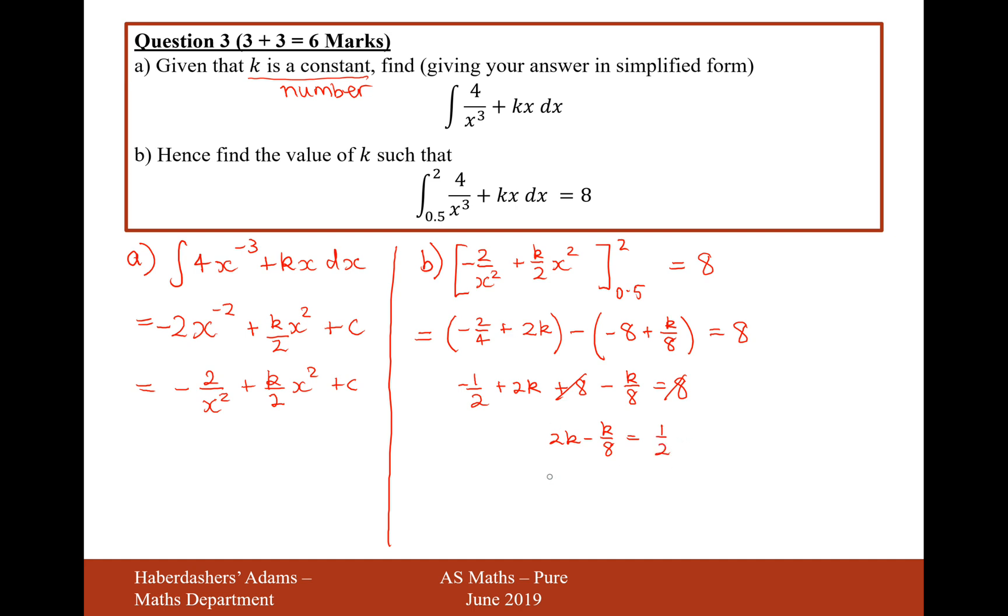Times everything by 8. So we're going to get 16k minus k equals half times 8 is 4. Simplify the left-hand side. That will give us 15k equals 4. So therefore, k equals 4 over 15.